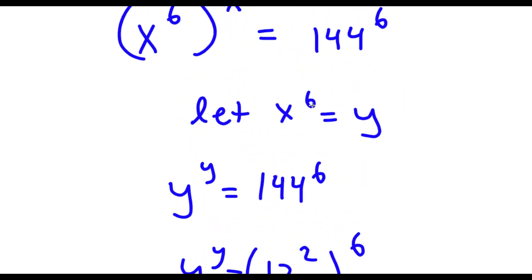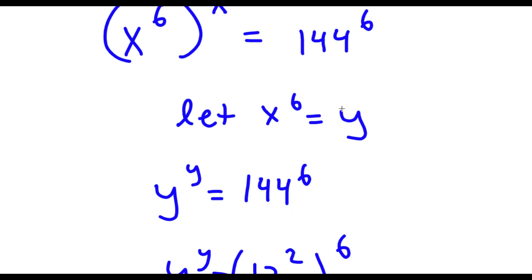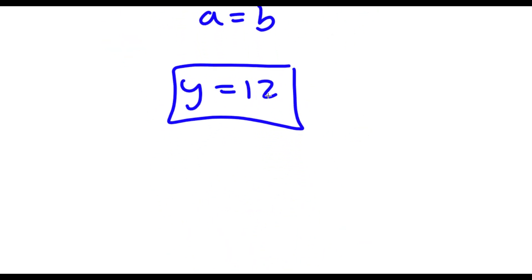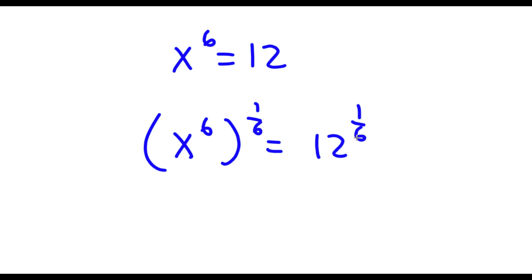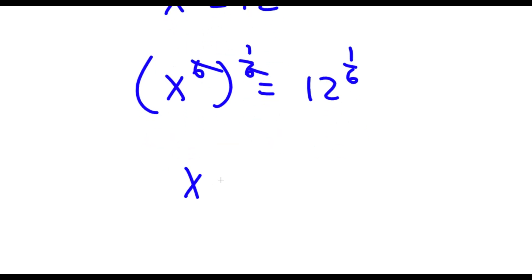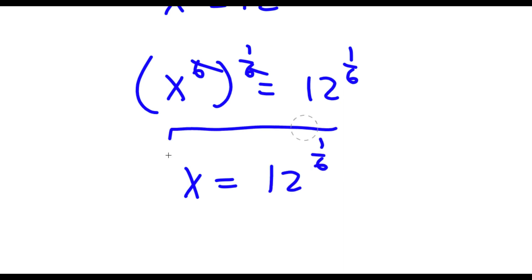However, remember we're not solving for y, we're solving for x. And x to the power of 6 equals y. So now that we know y is 12, this means x to the power of 6 is equal to 12. To solve this, I'm going to take the power of 1 over 6 on both sides. Now 6 times 1 over 6 cancel out, so I'm left with x is equal to 12 to the power of 1 over 6. So this is my answer.